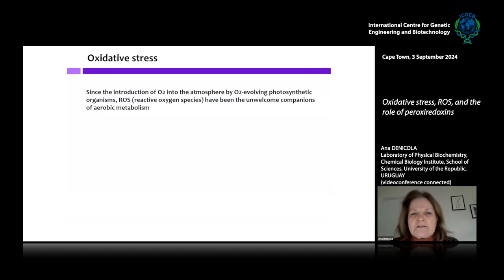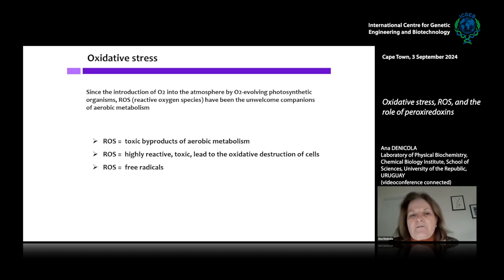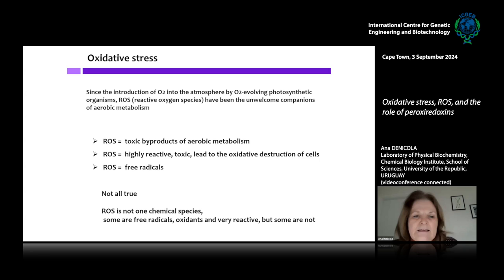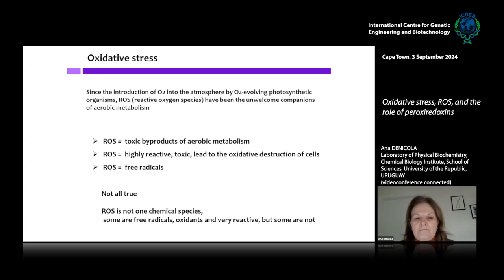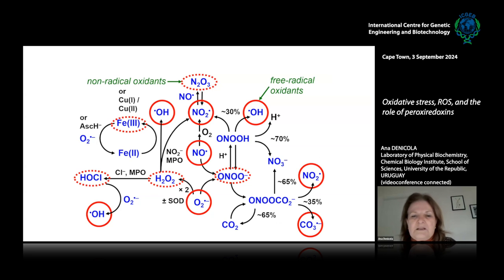You've probably heard of the term ROS — reactive oxygen species — and heard of ROS as free radicals, very reactive toxic byproducts of aerobic metabolism. But not all of this is true. ROS is not only one chemical species; under the name ROS we include a big group of compounds. Some of them are free radicals, some are not; some are oxidants and very reactive, but some are not.